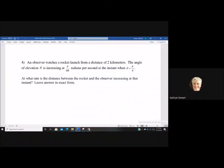Let's look at this related rates problem. An observer watches a rocket launch from a distance of two kilometers. The angle of elevation theta is increasing at pi over 60 radians per second at the instant when theta equals pi over 4 radians. At what rate is the distance between the rocket and the observer increasing at that instant? Leave answer in exact form.